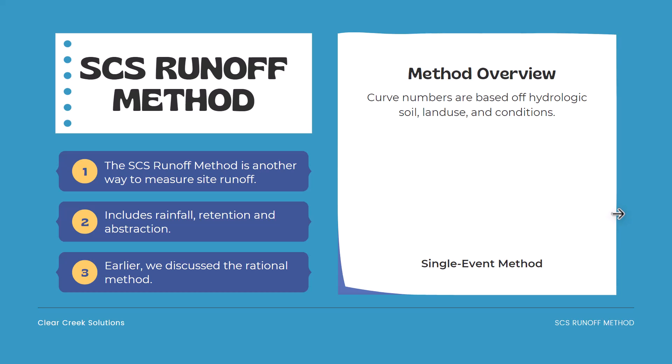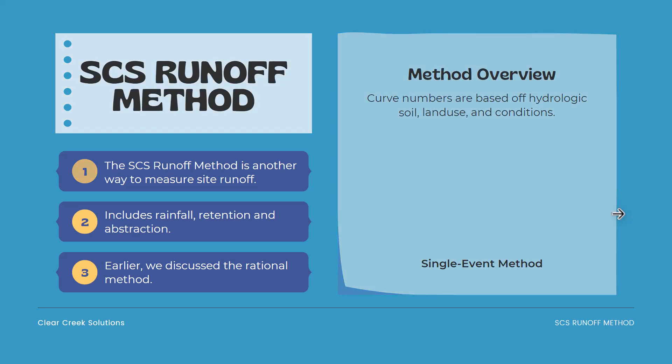Earlier we discussed the rational method, which is in the form of Q equals CIA. This SCS equation involves precipitation, retention, abstraction, and rainfall. Basically we use curve numbers that are based off hydrologic soil, land use, and conditions, and it is a single event hydrology method.